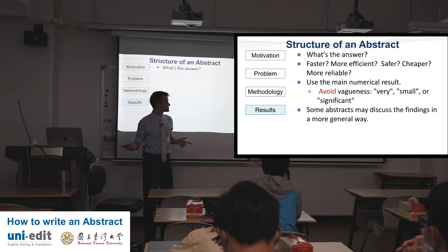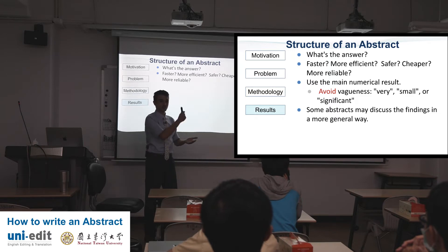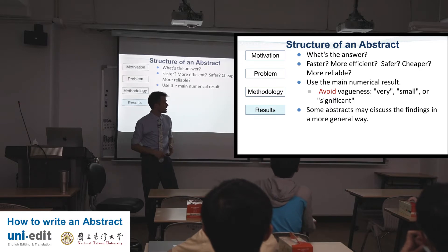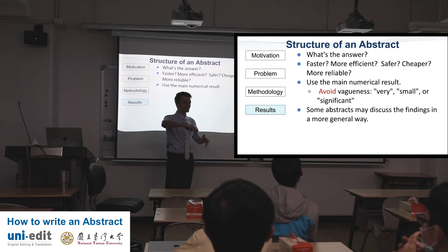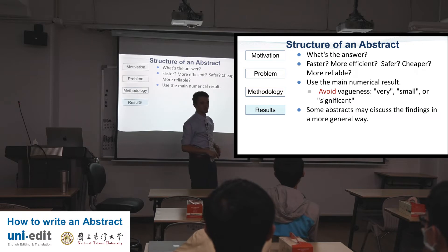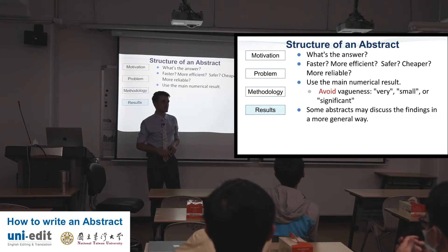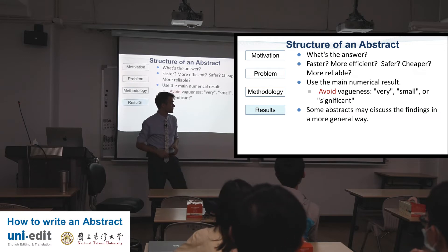Results: what's the answer? Is it faster, more efficient, safer, cheaper, more reliable? This is where you want to be authoritative — 'a 23% increase in efficiency.' Use the main numerical results. You might have data sheets of results — just use the main one or two or three. The general rule: if it's five or six, that gets confusing. Keep the numbers small. Avoid vagueness — 'very small' or 'significant' — let's be specific.